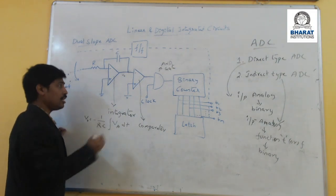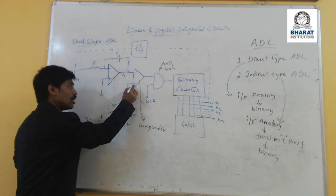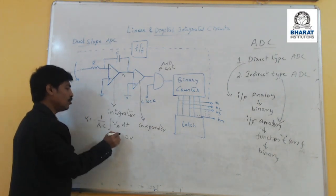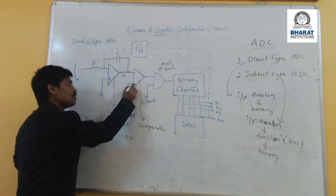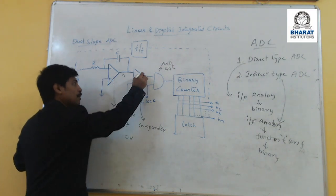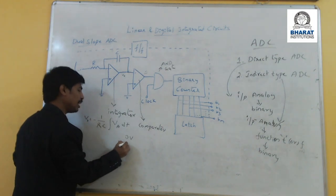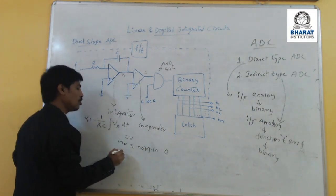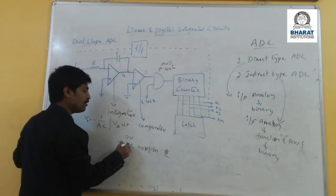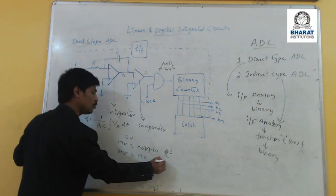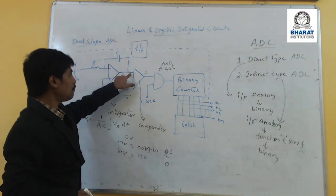The other terminal is connected to ground — here this is zero voltage, non-inverting terminal is zero voltage. The inverting terminal is having some voltage — it is negative voltage. As it is negative voltage, this becomes positive voltage. Positive voltage is more than negative voltage, or you can say non-inverting voltage is more than inverting voltage, so the output of the comparator is 1. When inverting voltage is less than non-inverting voltage, output of comparator is 1. When inverting voltage is greater than non-inverting voltage, output of comparator is 0. According to that, here comparator output is 1.